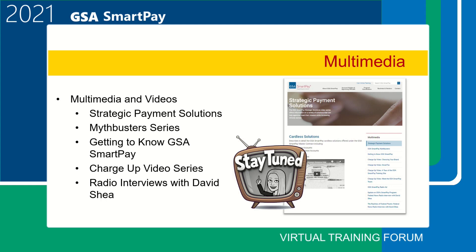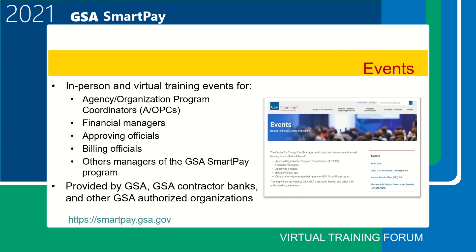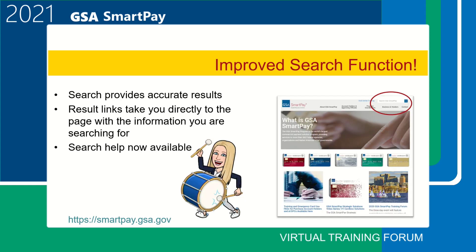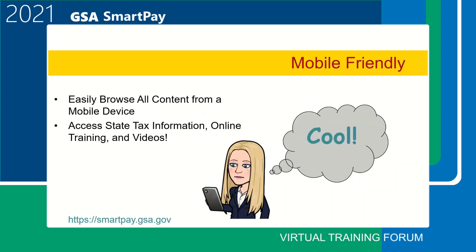The events section of the website features upcoming events, including the GSA SmartPay forum and other SmartPay-related events. Events posted here include both in-person and virtual training events that benefit AOPCs, AOs, and others who help manage their agency's program. The searching capabilities of the new website are really good, so if you can't find something, use the search bar at the top right corner of the page. The GSA SmartPay website continues to be easily accessible from any device, including mobile and tablets.